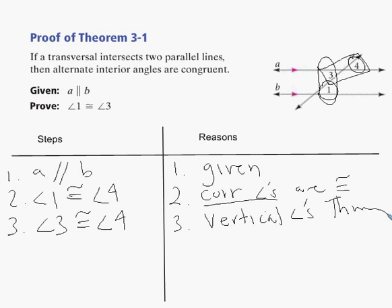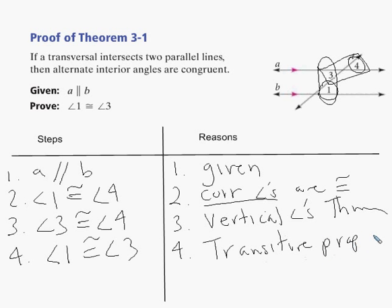Now, we see that angle 1 is congruent to angle 4. Angle 3 is congruent to angle 4. And so that means that angle 1 is congruent to angle 3. All three of those angles are congruent all to each other. And that, of course, is the transitive property of congruence.